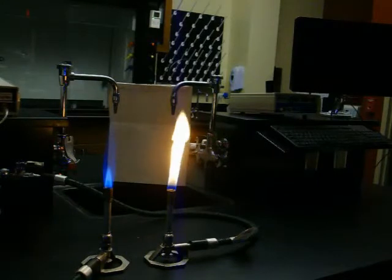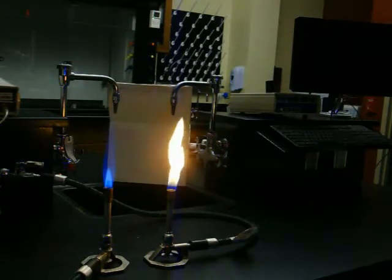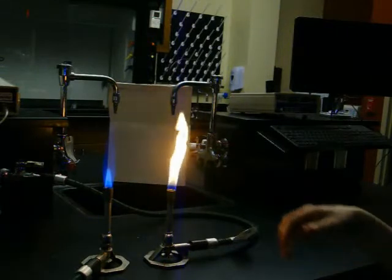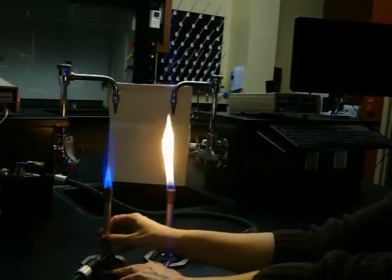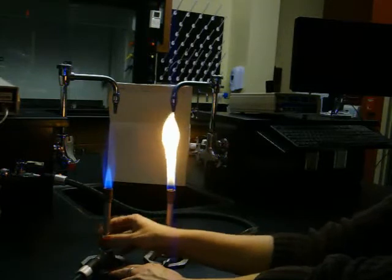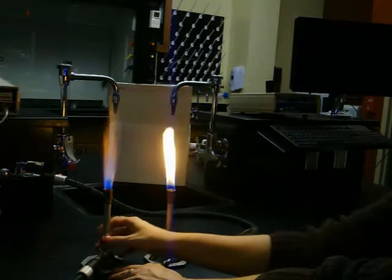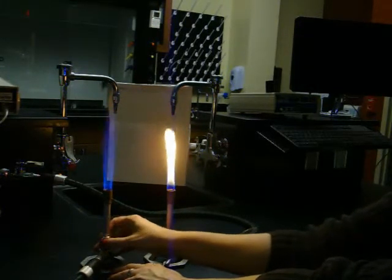A cold flame looks like a candle flame and is used to heat surfaces or substances gently. It is set by reducing the amount of oxygen proportionally to the amount of gas. Therefore, the air holes are either slightly opened or completely shut.